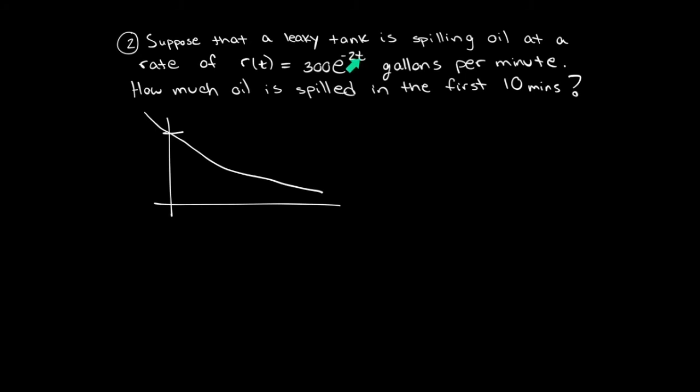let's plug in t equals 0. We get e to the 0, which is 1, times 300. So at t equals 0, the r function, or the rate function, starts at 300. Since it's a negative exponential, it decreases over time.